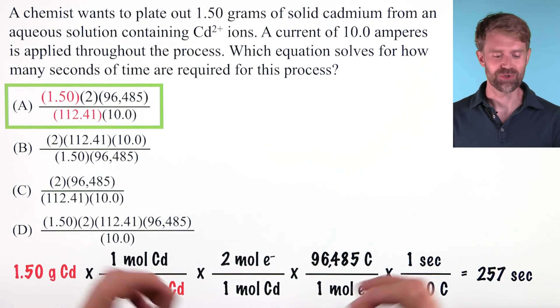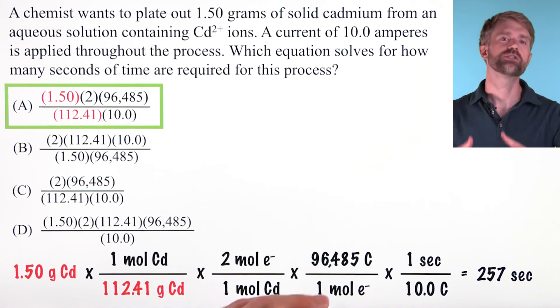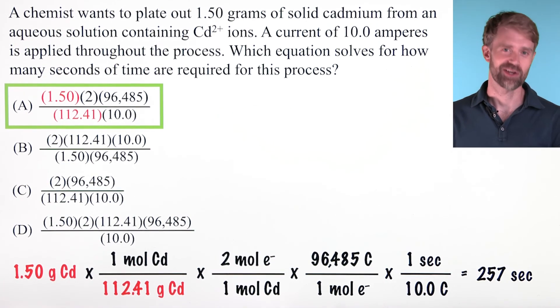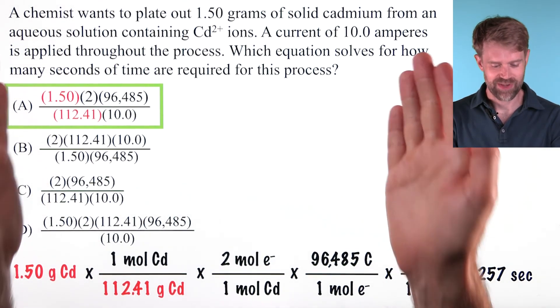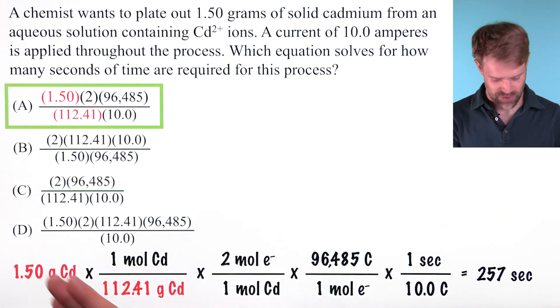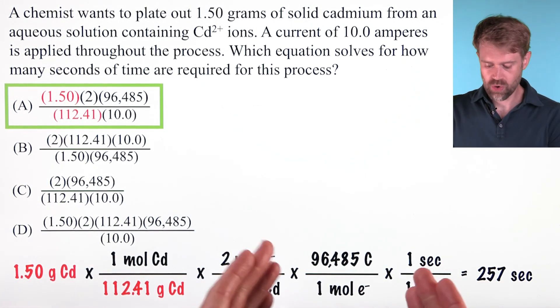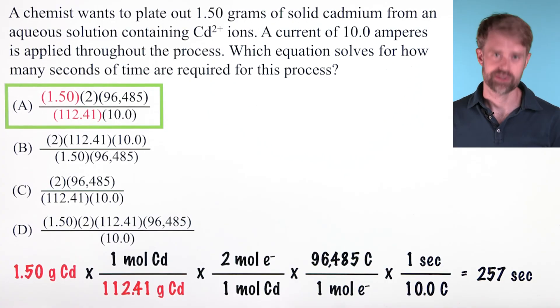As always though, you should know how to do the full problem because you never know when the test is going to trick you. But that's how we solve an electroplating problem like this with a bunch of conversion factors, almost always involving Faraday's constant.